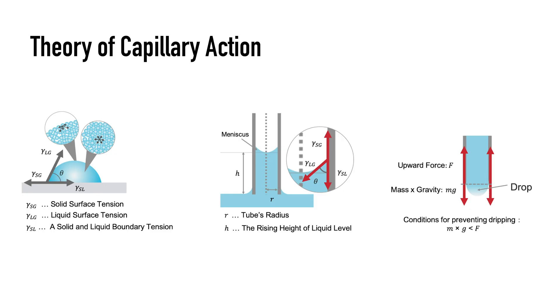We show a theory of capillary action. Surface tension can be controlled by a combination of liquid density and 3D printing material, and the height of the liquid can be controlled by changing the tube diameter.